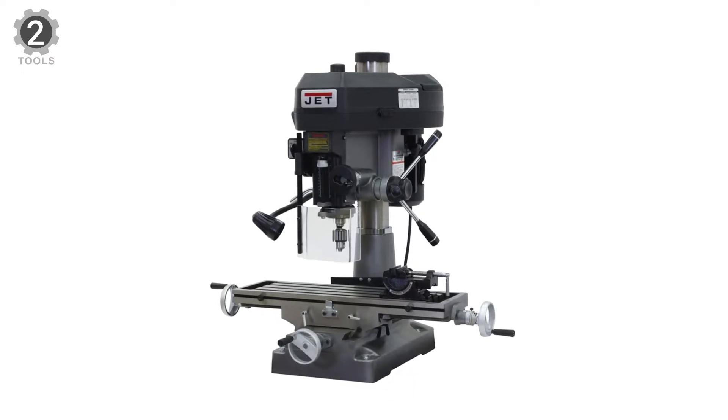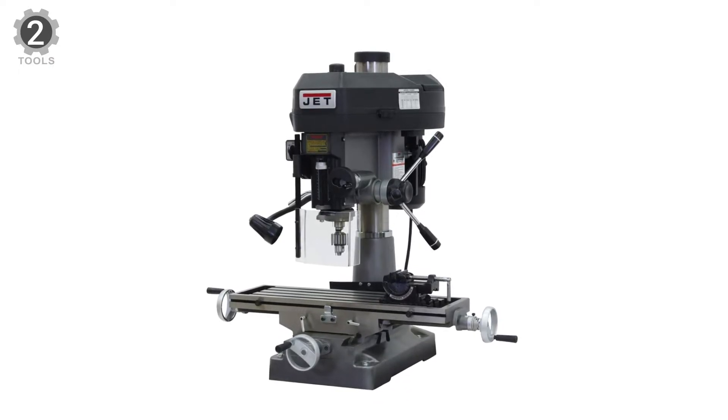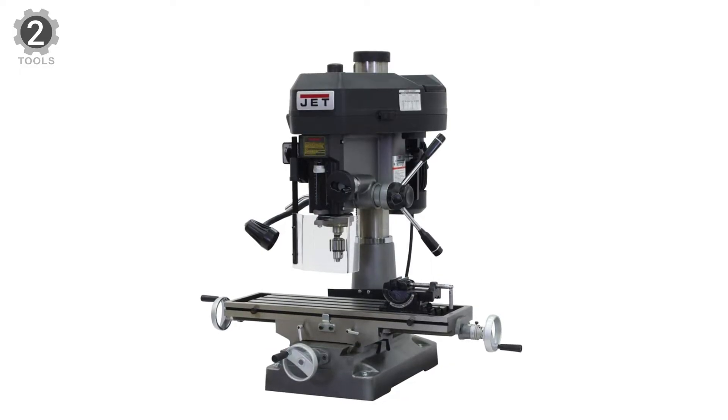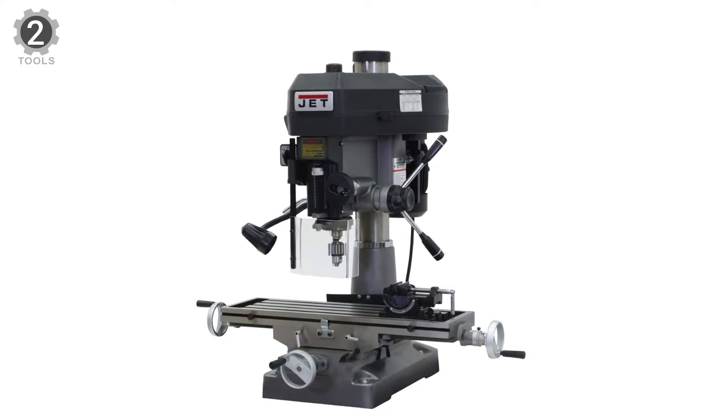This mill and drill model operates with a powerful 2HP, single-phase, 230-volt motor that gives the machine a range of 12 spindle speeds from 150 to 3000 RPM.